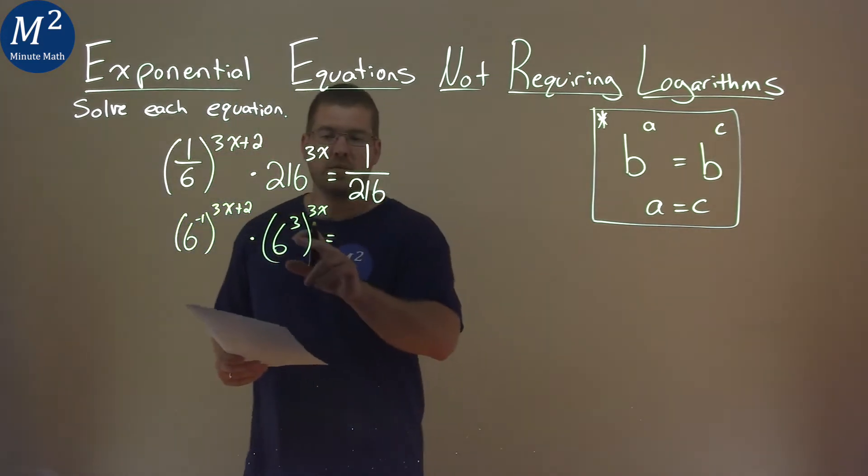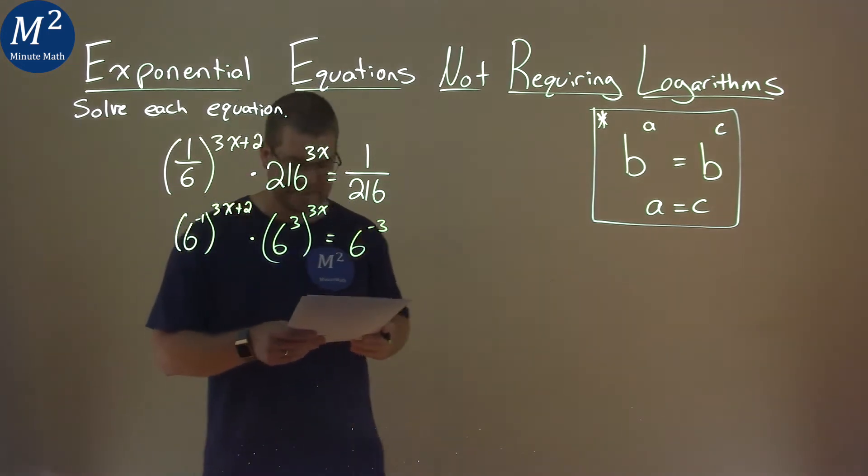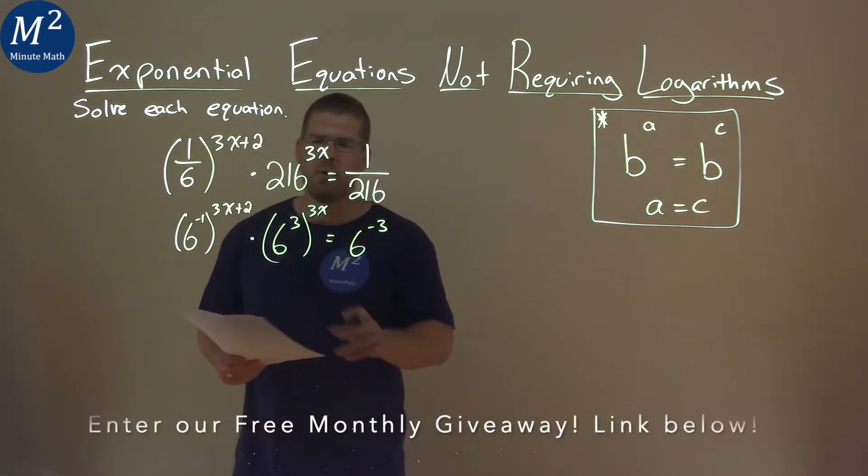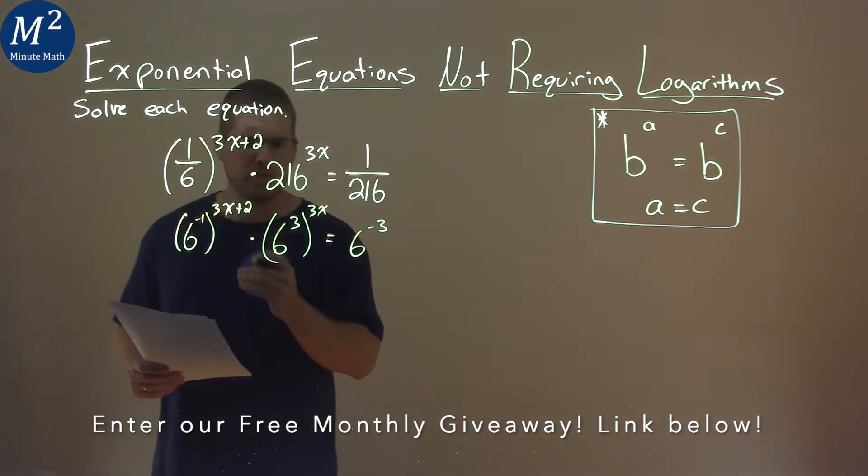Since 216 is 6 to the 3rd, 6 to the negative 3rd is the same as 1 over 216. And now we have 6s going across the board, so this is going to help us here. So let's simplify where we can.